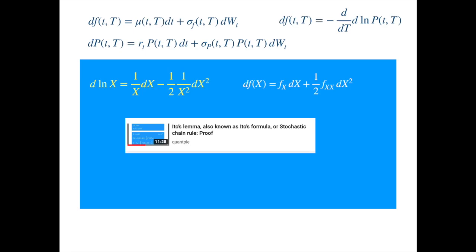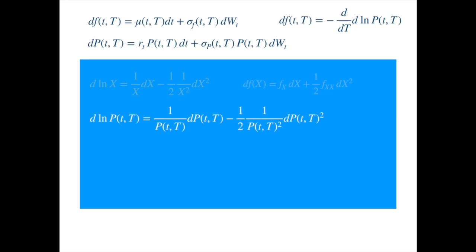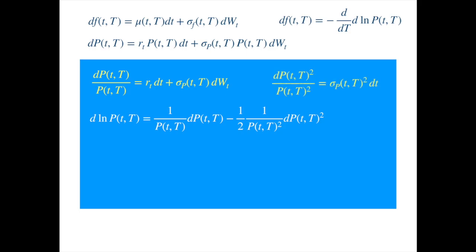Now let's substitute the price of the zero coupon for x and determine the two terms on the right hand side. The first one is easy — we just shift P to the left hand side. For the quadratic term, delta t squared and the cross term between delta t and delta W will become zero, and delta W squared will become dt, so we get sigma squared dt. We can substitute these into the differential of log of P.